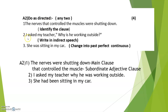Next: 'I asked my teacher why is he working outside' — write it in indirect speech. When writing indirect speech, remove all punctuation marks and write it in the past tense. Answer: 'I asked my teacher why he was working outside.' Then: 'She was sitting in my car' — change into past perfect continuous tense, meaning the action was over but still ongoing, using -ing. Answer: 'She had been sitting in my car.' Always remember in past perfect continuous tense you must have 'had been.'